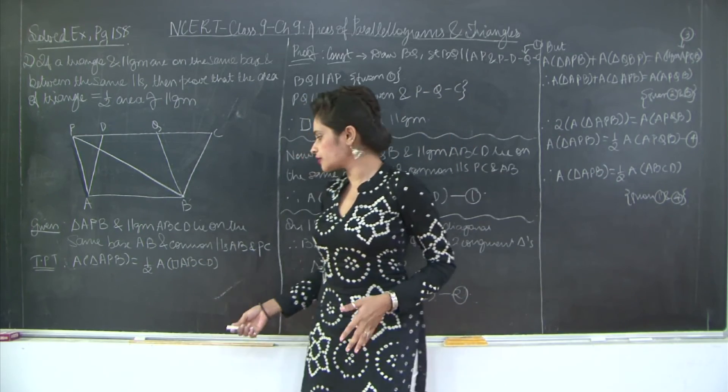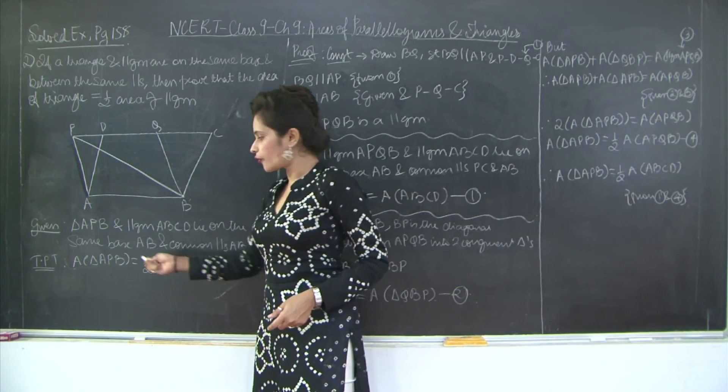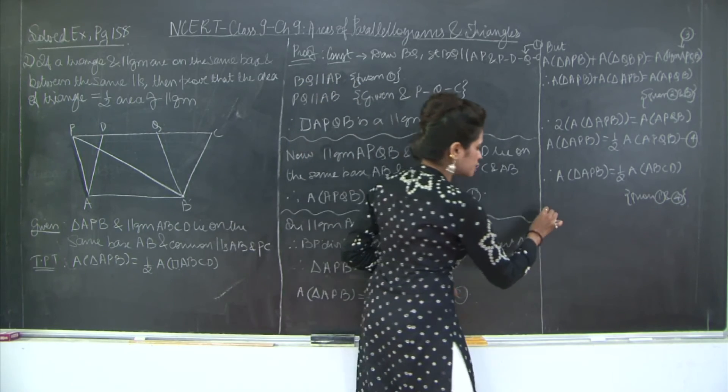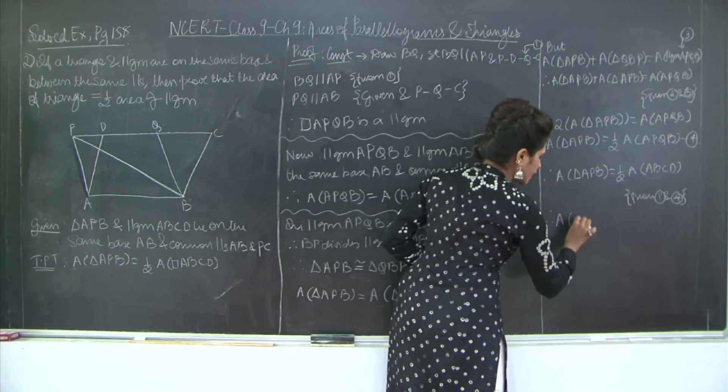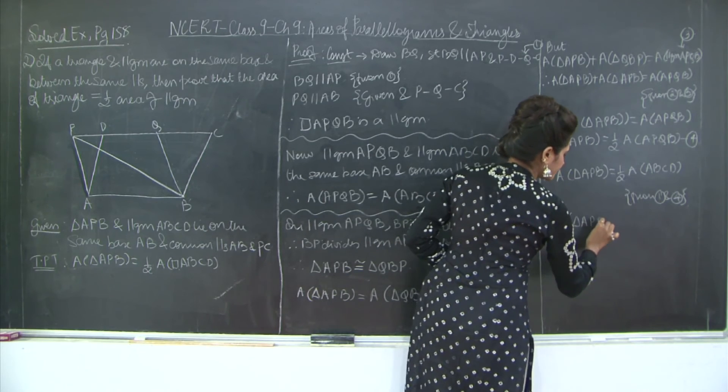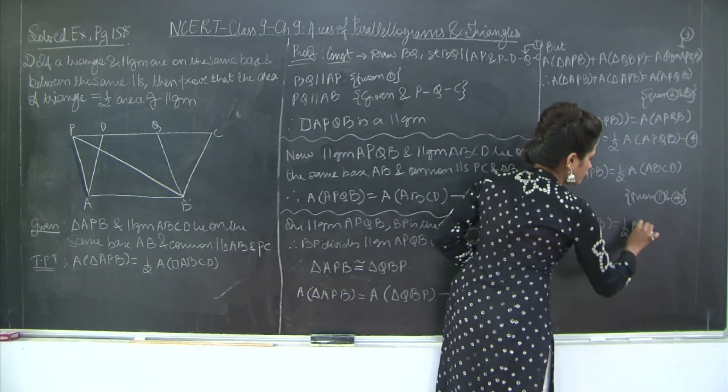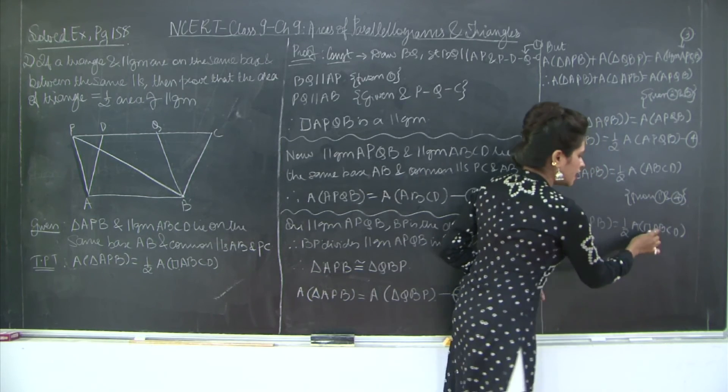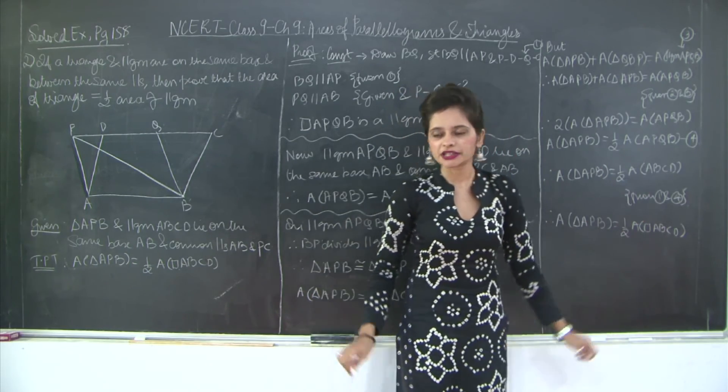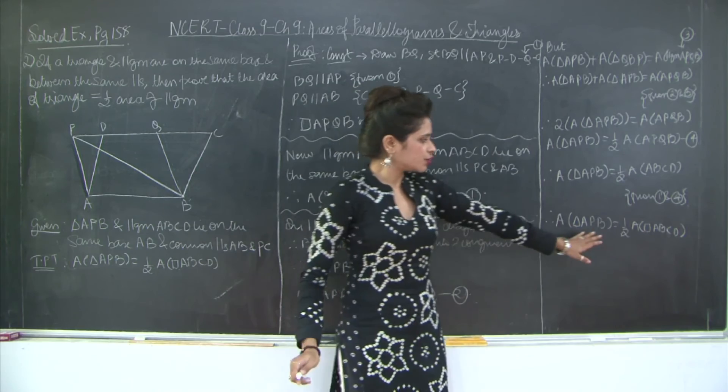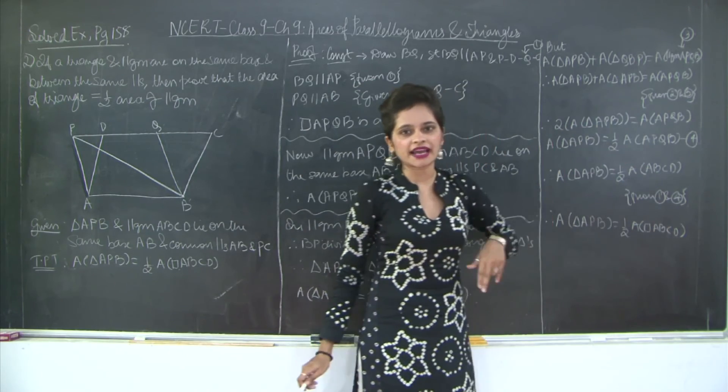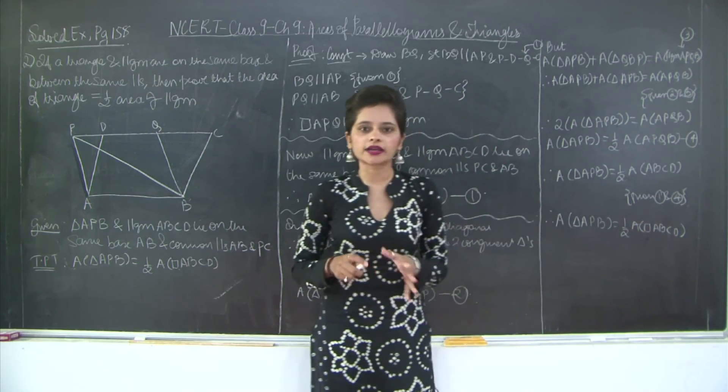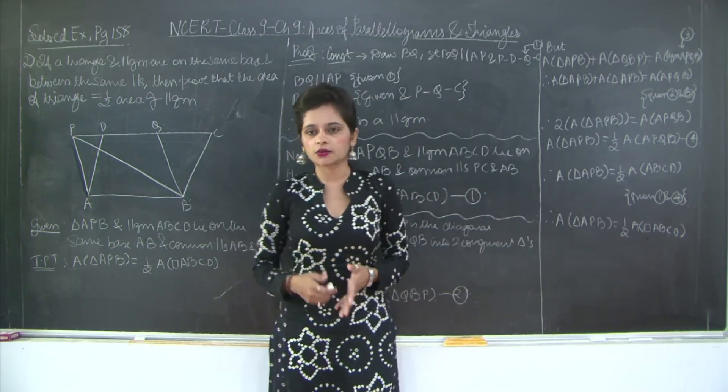In your textbooks, they haven't given these notations for a triangle and quadrilateral or a parallelogram, so it's always a good practice to get into the habit of doing it. You may write parallelogram with a double line or draw this small box to denote a quadrilateral. This is what we were supposed to prove.